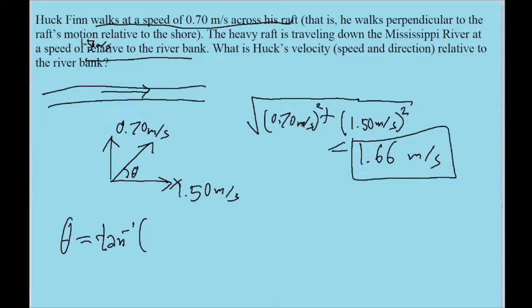So if this is the x direction, this is the y direction, as they usually are, and that means we want to take the inverse tangent of 0.70 divided by 1.50.